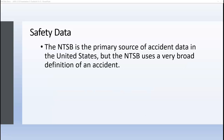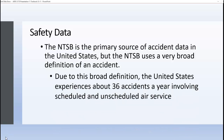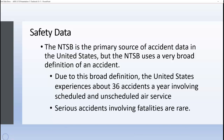The NTSB is the primary source of data concerning accidents in the United States. Anyone interested in commercial aviation accident rates can go to the NTSB website, but it's important to remember that the NTSB uses a very broad definition of an accident. Due to this broad definition, the United States experiences about 36 accidents a year involving scheduled and unscheduled air service, though serious accidents involving fatalities are rare.